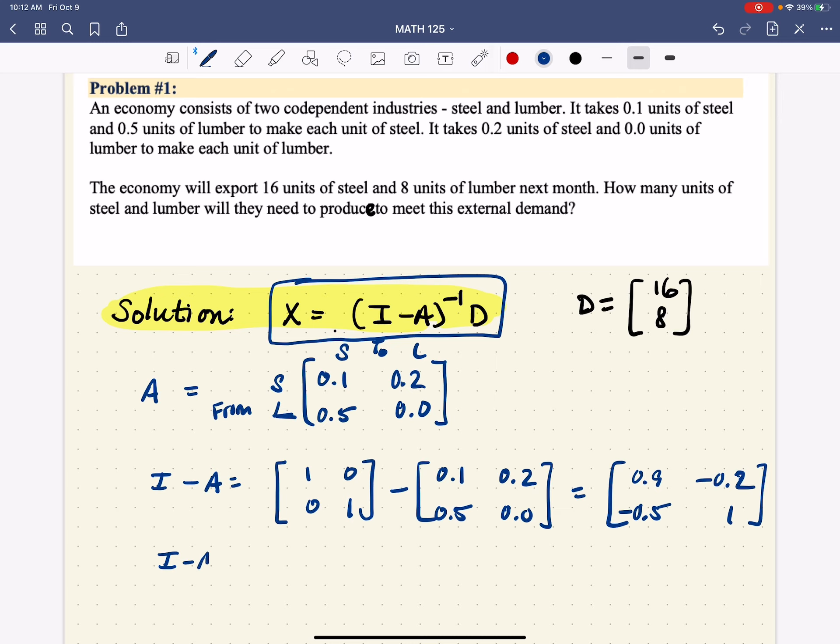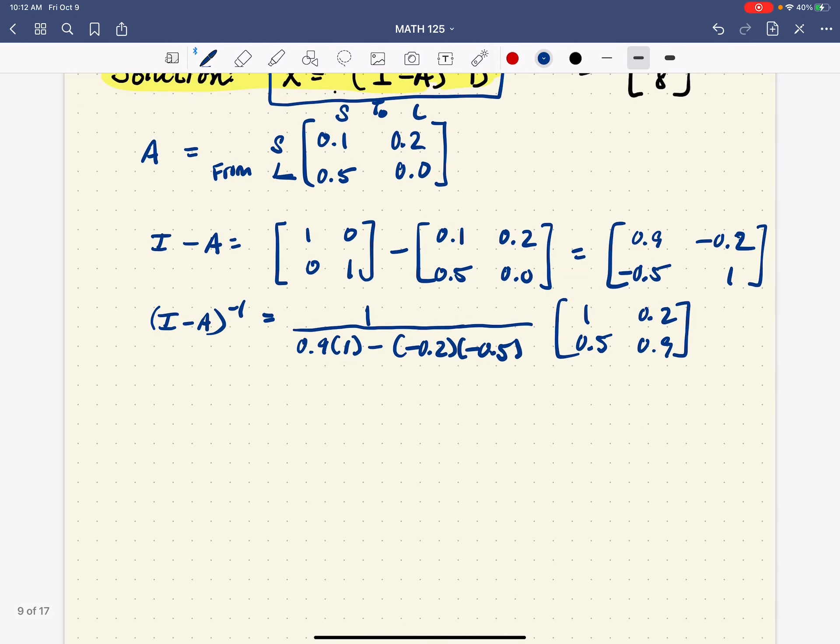So then I minus A inverse. Remember, the inverse of a 2 by 2 is that shortcut formula. So 1 over 0.9 times 1 minus negative 0.2 times negative 0.5. And then what we do is we interchange the main diagonal elements and then we negate the other elements. So simplifying that a little bit, 0.9 times 1 is 0.9. This here is 0.1. So we have 1 over 0.8 times this matrix.